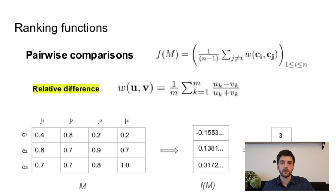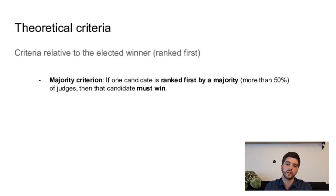So that was for the ranking functions. Now let's see what are the criteria we propose to evaluate them. So here we have theoretical criteria relative to the candidate ranked first, so the winner. The first criterion is the majority criterion, which says that if one candidate is ranked first by a majority of judges, then that candidate must win. And if your ranking function does not rank this candidate first, then it does not satisfy the majority criterion.